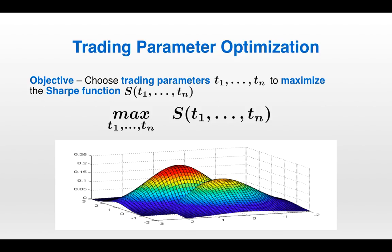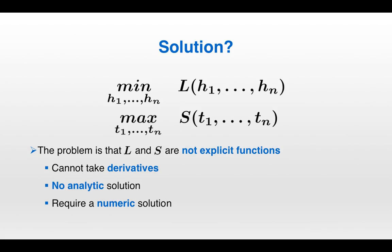The objective in trading parameter optimization is to choose the trading parameters T1 to TN in order to maximize the Sharpe function S of T1 to TN. So we have these two multivariate optimization problems: choose the hyperparameters to minimize the loss, and choose the trading parameters to maximize the Sharpe.